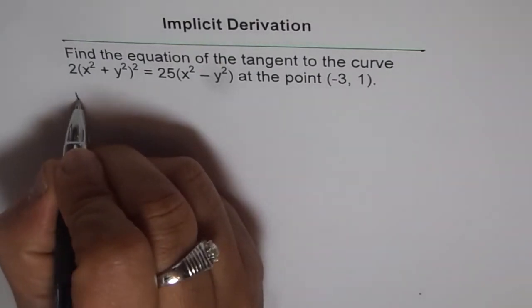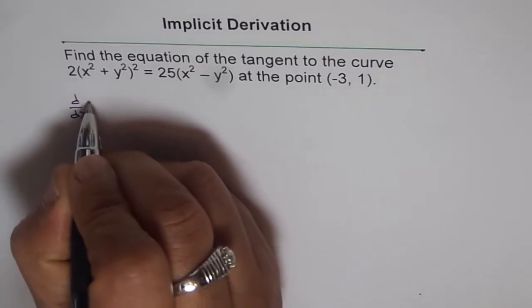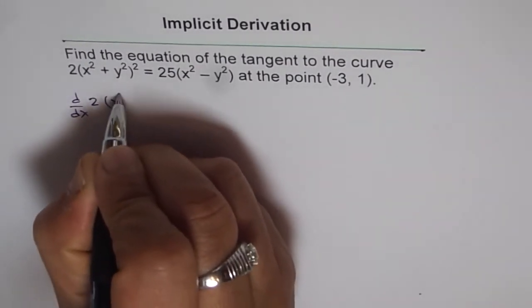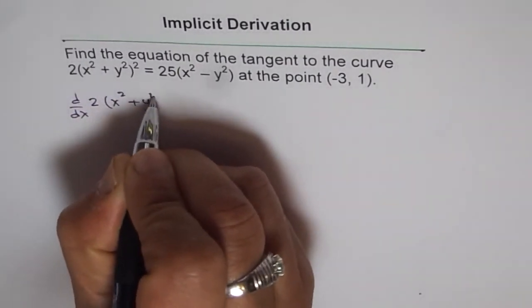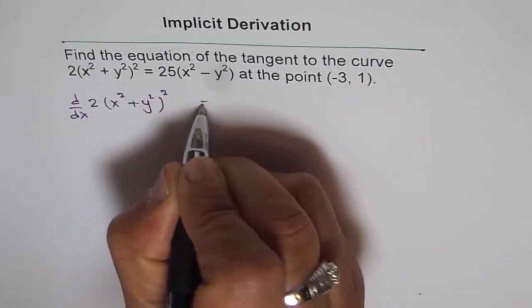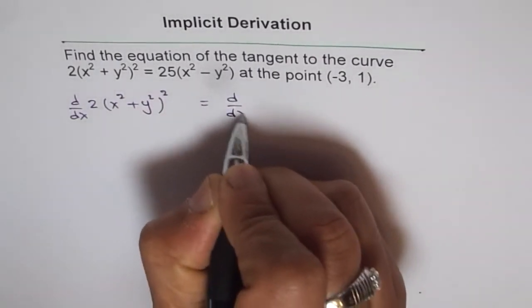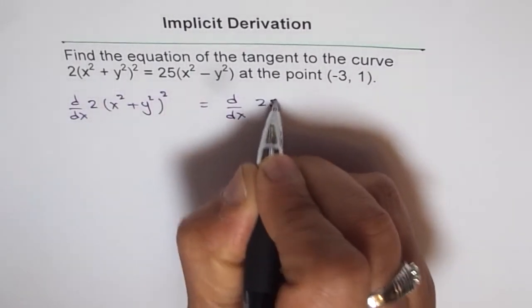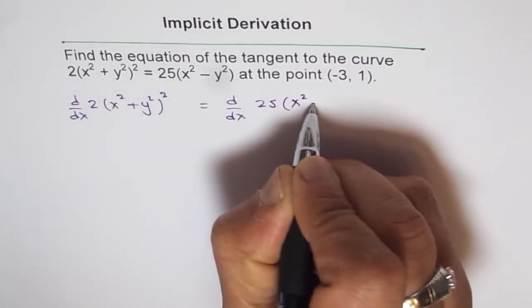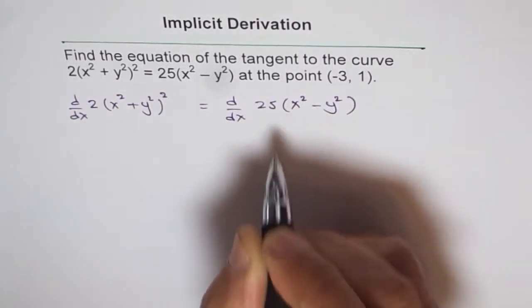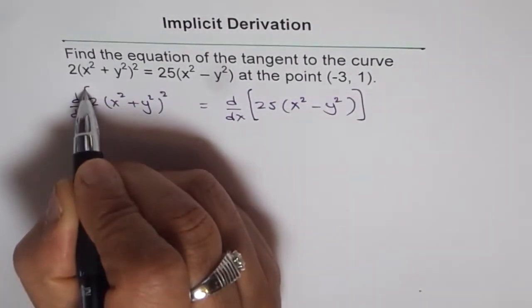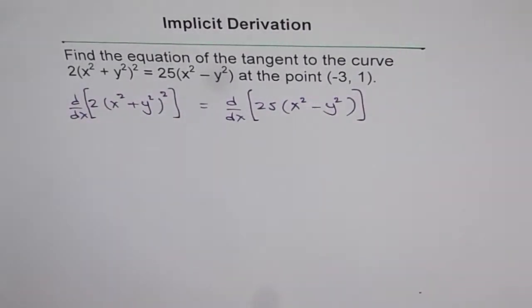So we get d/dx of 2(x² + y²)² equals d/dx of 25(x² - y²). We have to take the derivative of all this on both sides.